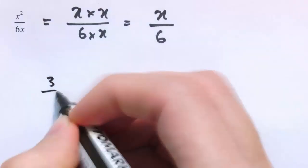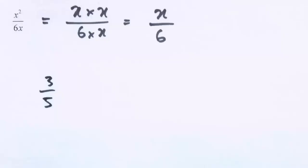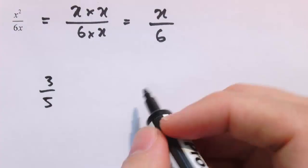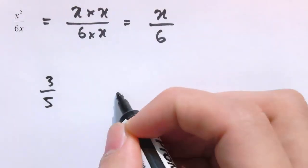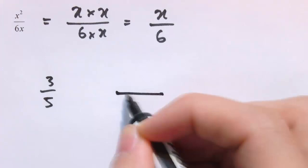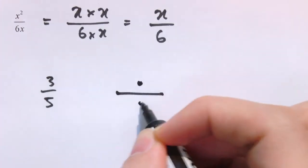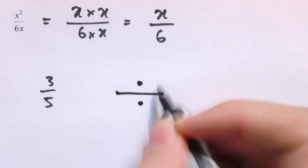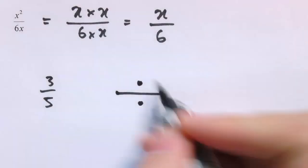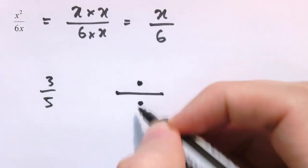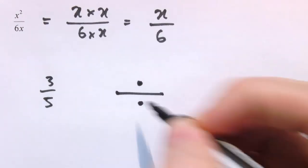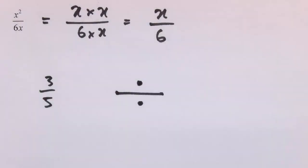A fraction like 3 fifths means the number you get when you divide 3 by 5. That's where the division symbol comes from in a way — it's something divided by something else, and that's what we've got in a fraction. Those two dots represent those missing things top and bottom in the fraction.